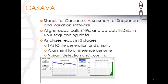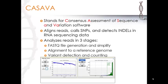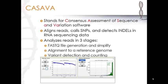CASAVA is a really convenient software as it does a variety of analysis such as quality assessment, alignment, and variant identification. The software stands for Consensus Assessment of Sequence and Variation. It mainly focuses on single nucleotide polymorphisms and indels, which are insertions and deletions.